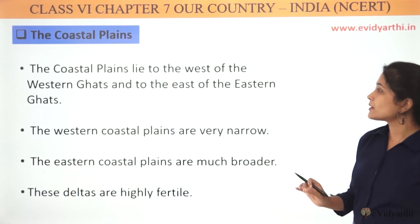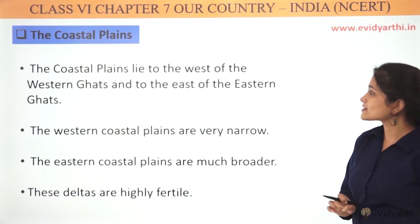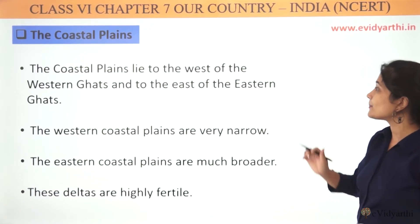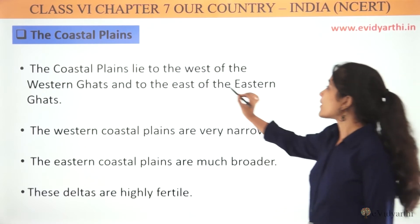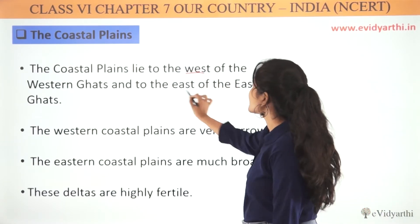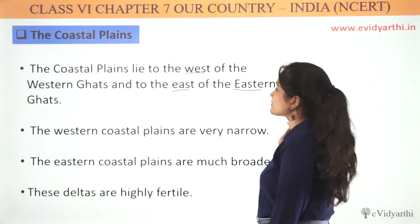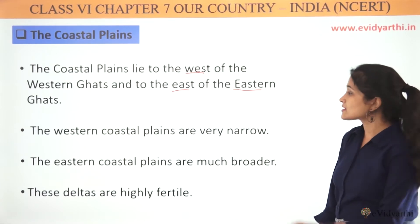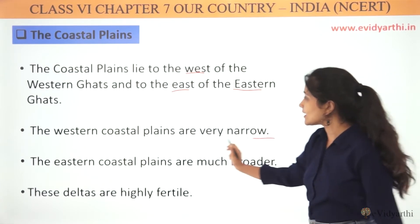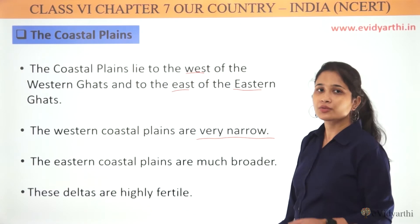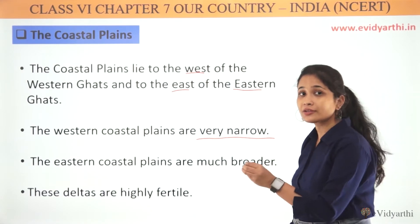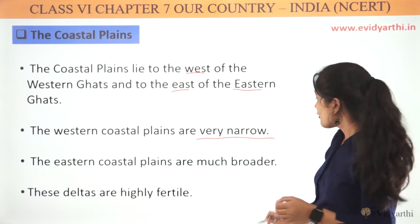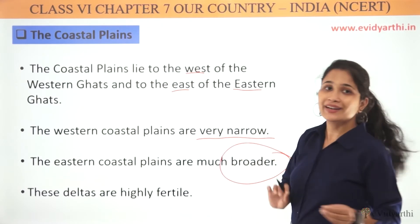The coastal plains lie to the west of the Western Ghats and to the east of the Eastern Ghats. The western coastal plains are very narrow, very small, but the eastern coastal plain is very broad, very big.